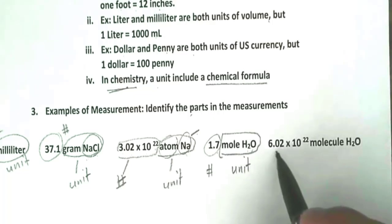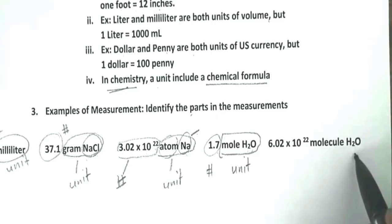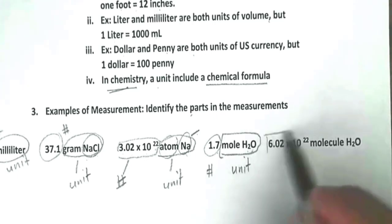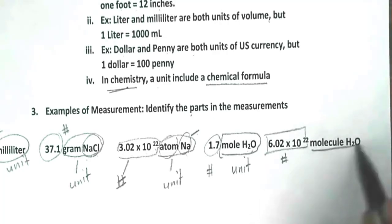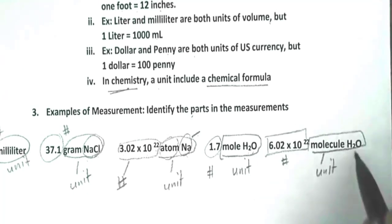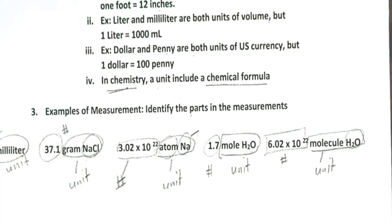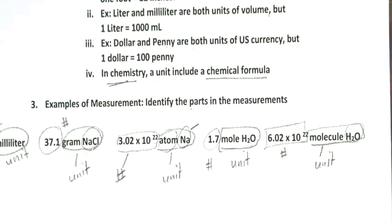Then we have 6.02 times 10 to the 22nd molecules of H2O, and this is your number. And this is your unit, which includes a chemical formula, H2O, which is water.